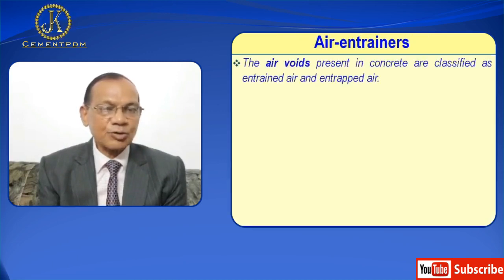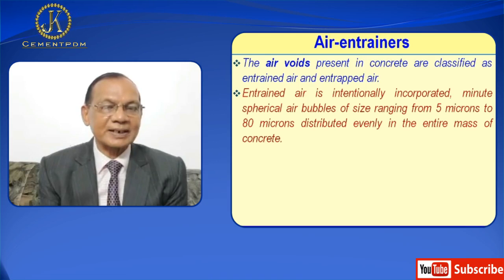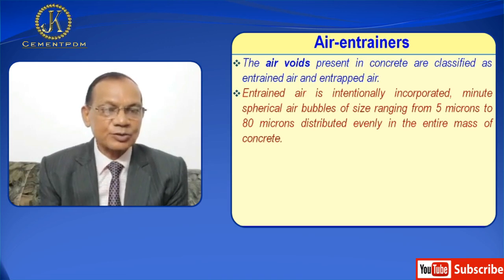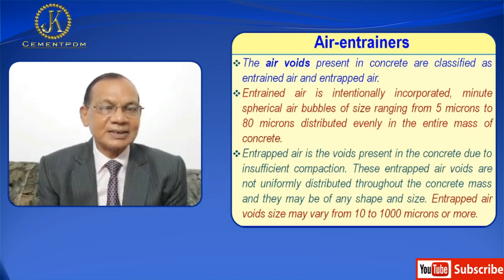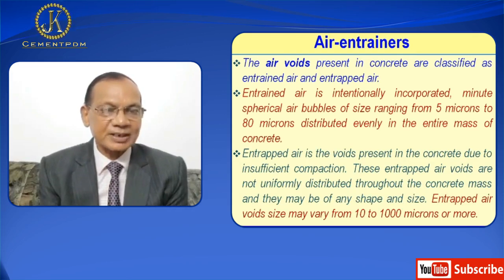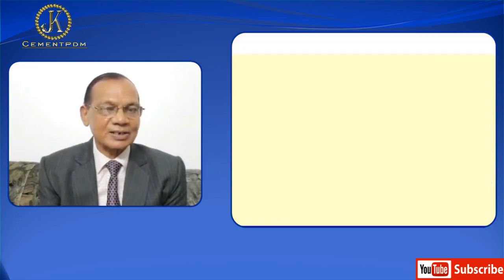The air voids present in concrete are classified as entrained air and entrapped air. Entrained air is intentionally incorporated as minute spherical air bubbles of size ranging from 5 microns to 80 microns, distributed evenly throughout the entire mass of concrete. Entrapped air is the voids present in concrete due to insufficient compaction; these are not uniformly distributed and may be of any shape and size, with void size varying from 10 to 1000 microns or more.